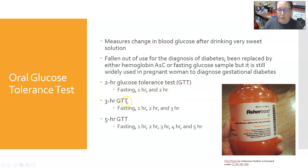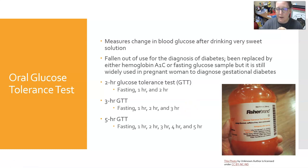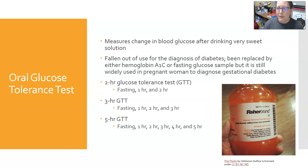There is also a three-hour and a five-hour version, though the five-hour is rarely done. On the three-hour test, another level is drawn at three hours. If the patient is not diabetic, the fasting glucose will be normal, the one-hour glucose will probably still be high, and by two hours it should have come back down to normal. If the two-hour level is still elevated, that can indicate gestational diabetes.